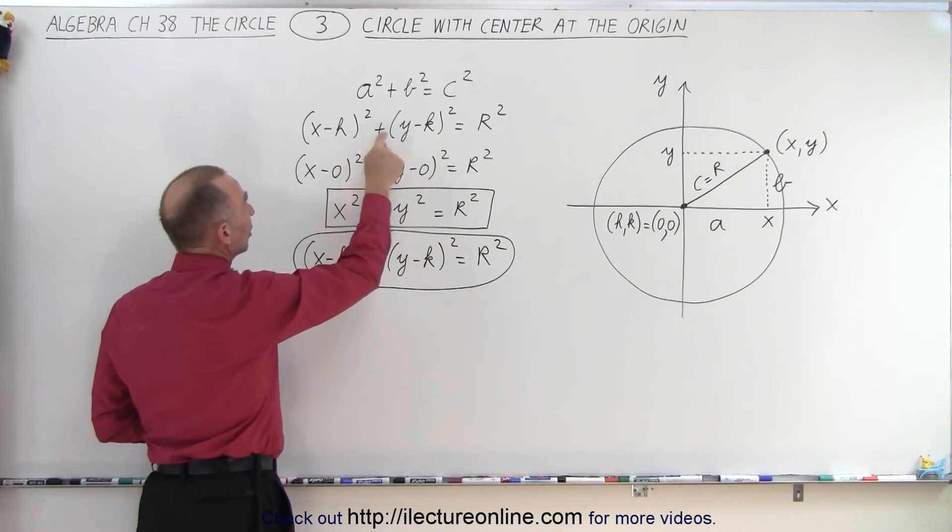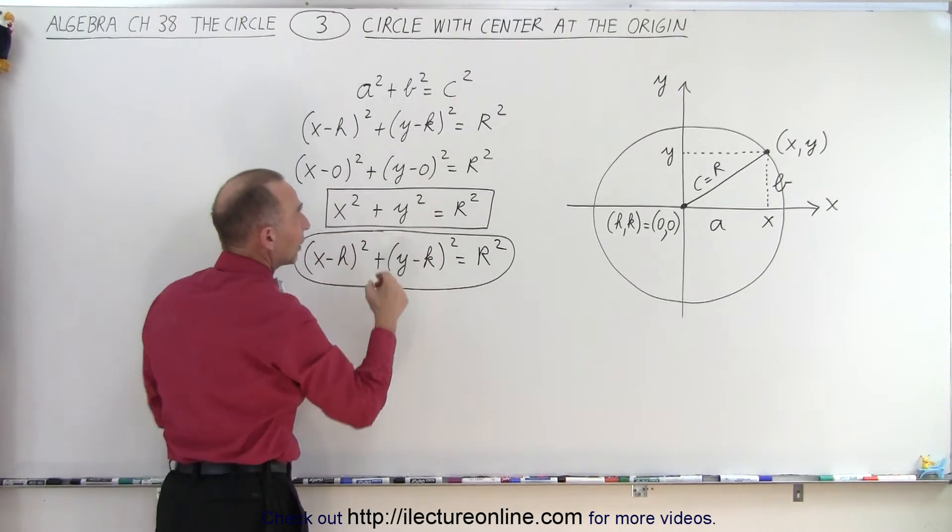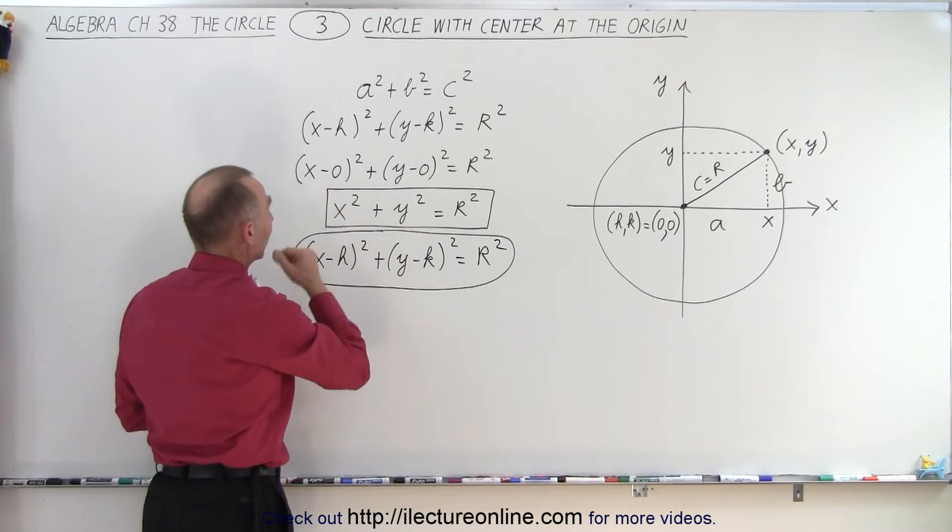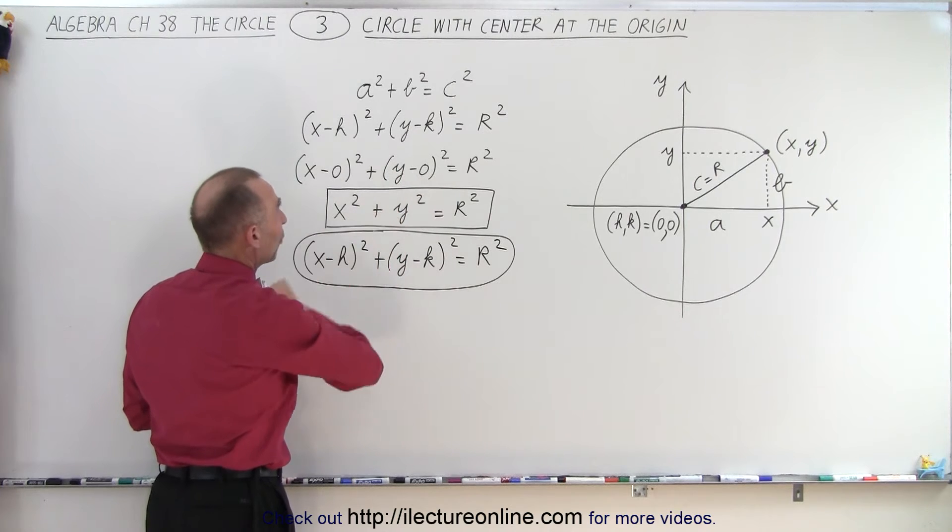But remember that h and k in this case will be zero because we place the circle at the origin. So therefore, instead of x minus zero we simply have x, instead of y minus zero we simply have y.